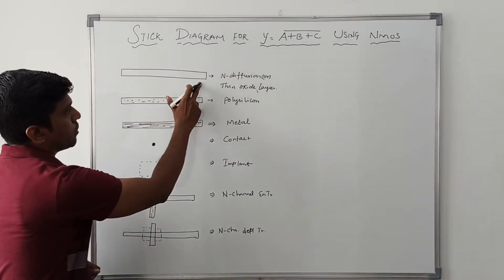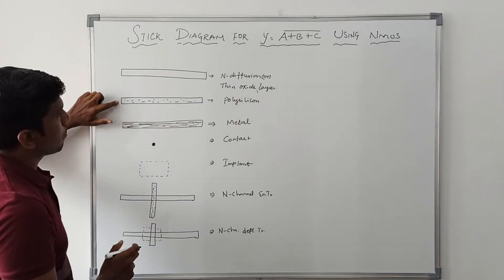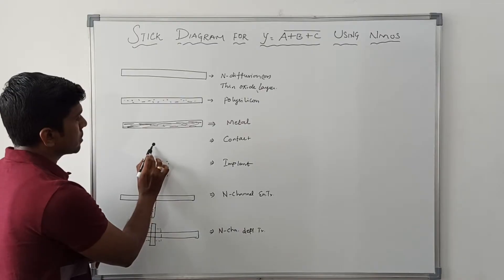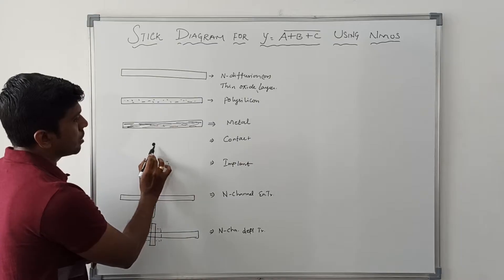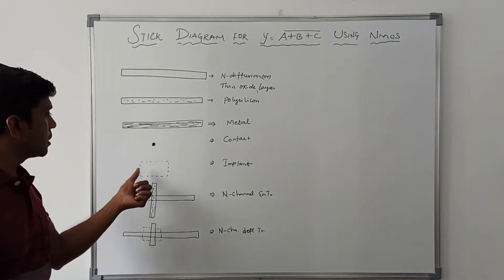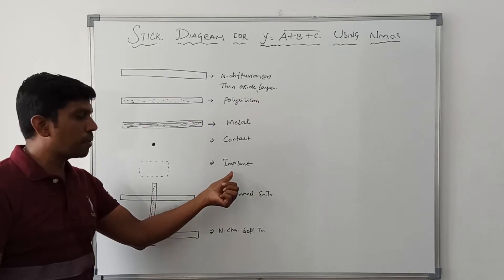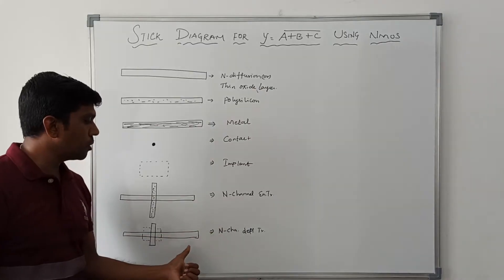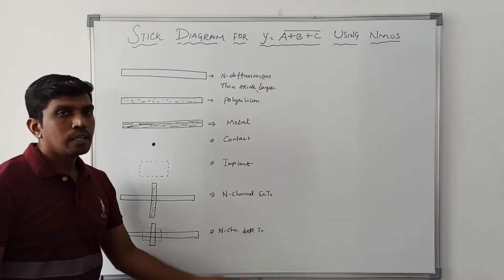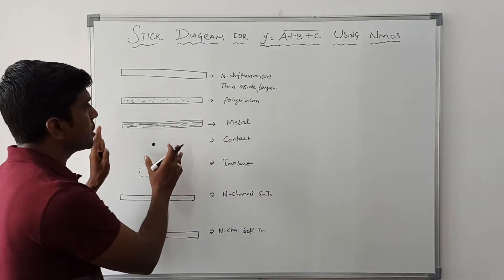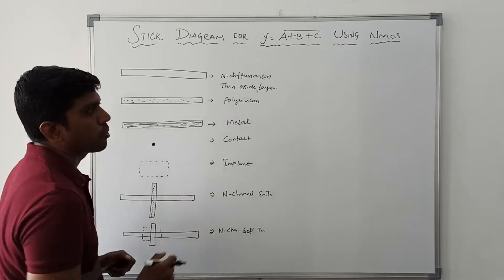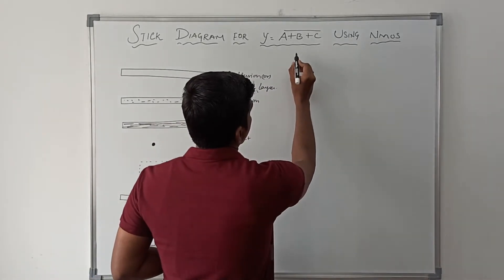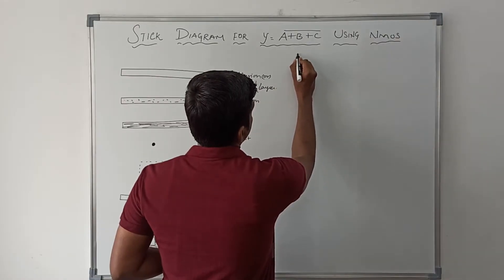To summarize: the first element is N diffusion, then polysilicon, then metal, then contact, then implant. The combined N diffusion and polysilicon symbol gives either an N channel enhancement mode or N channel depletion mode transistor. Using these graphical representations, I am now going to draw the stick diagram. But first, I will draw the logic circuit for the given Boolean expression.